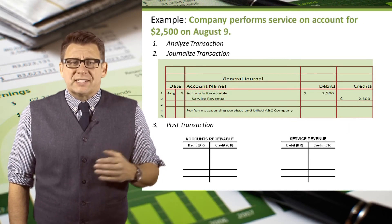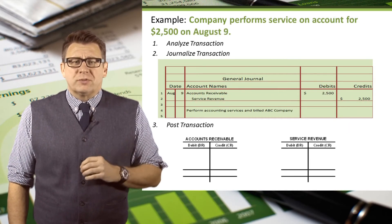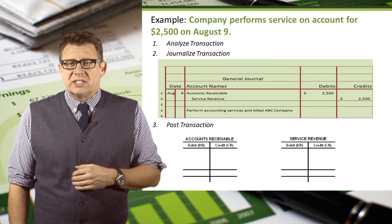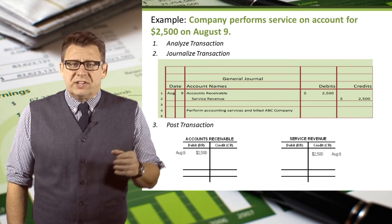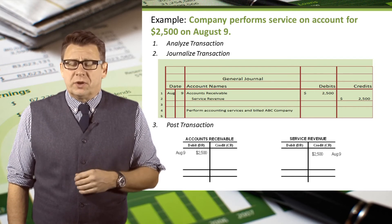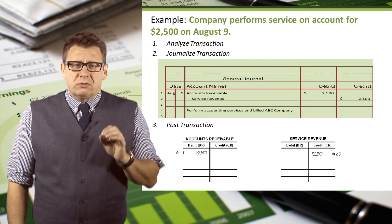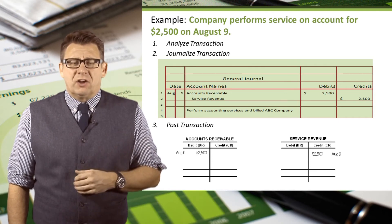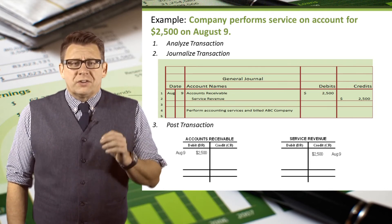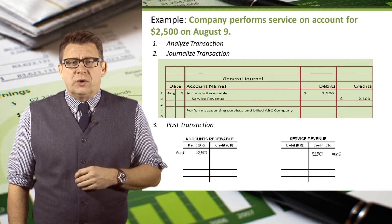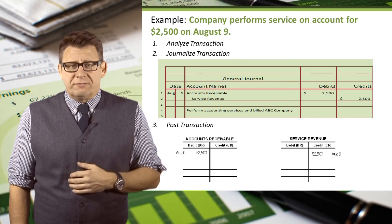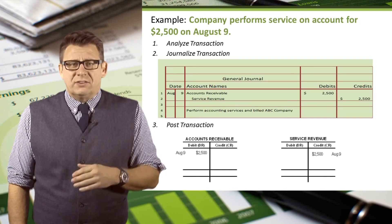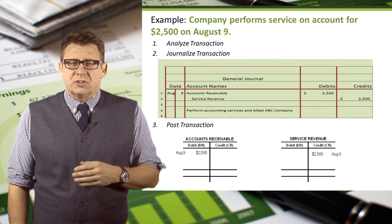In this next example, a company performs service on account for $2,500. The date is August 9th. Accounts receivable is the debit account and the amount is $2,500, so we post $2,500 and the date to the debit side of accounts receivable. Service revenue is the credit account and the amount is $2,500, so we post $2,500 and the date to the credit side of service revenue.